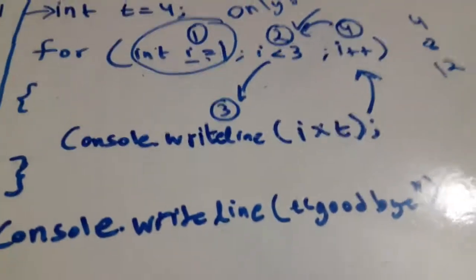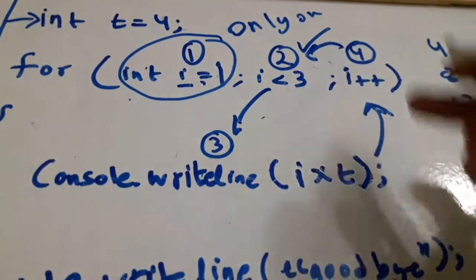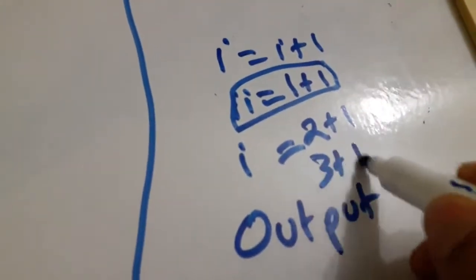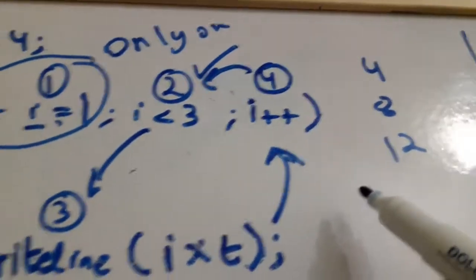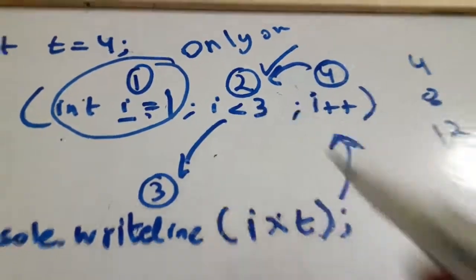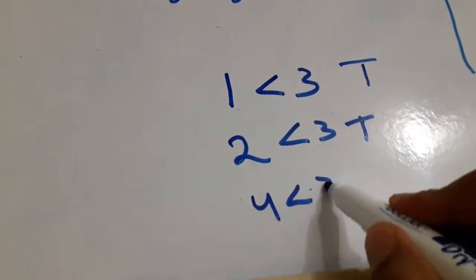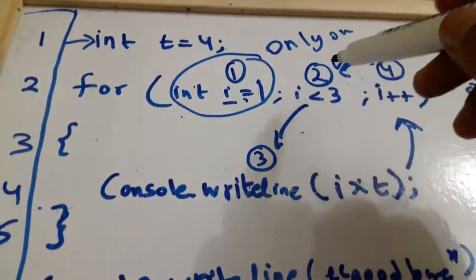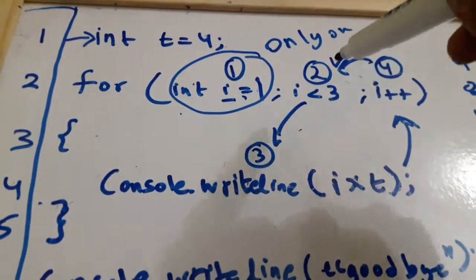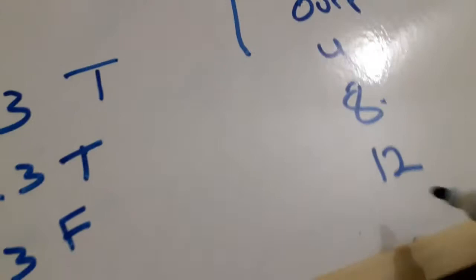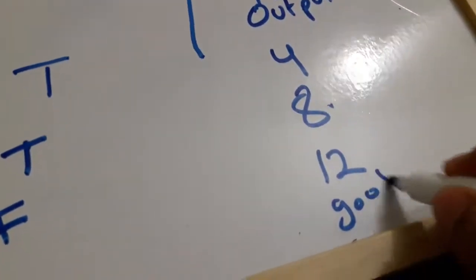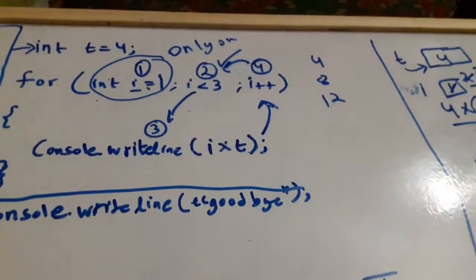After printing twelve, the program goes to the increment again: three plus one equals four, so i is updated to four. Now the condition check runs: is four less than three? That is now false. Once the program finds the condition is false, it jumps to line six — the block is finished — and it prints 'goodbye'. So the final output is four, eight, twelve, and goodbye.